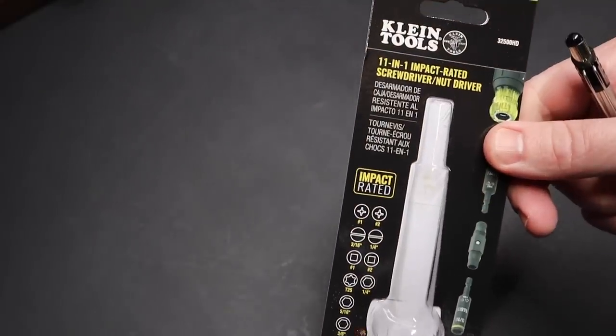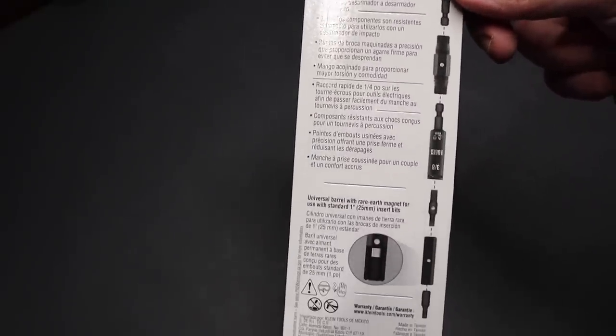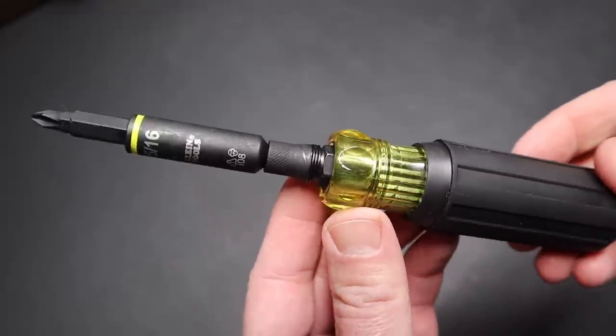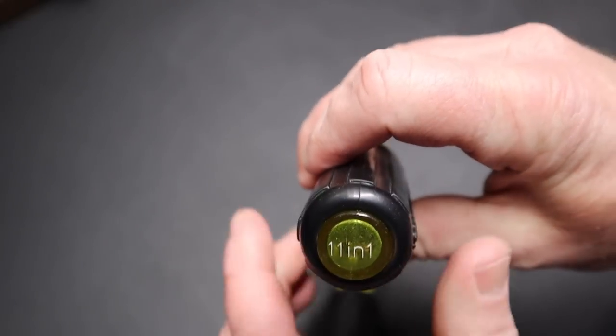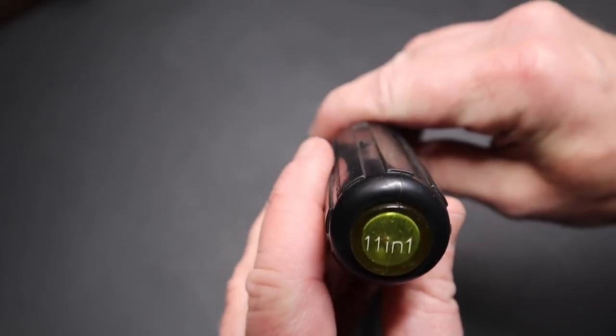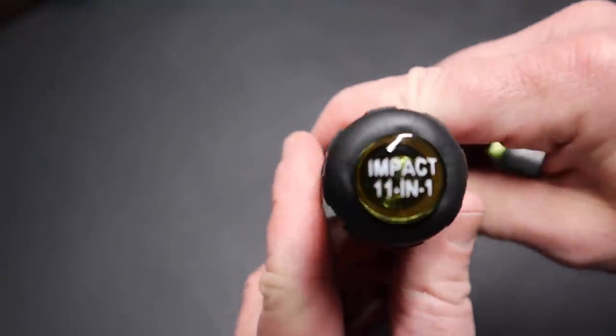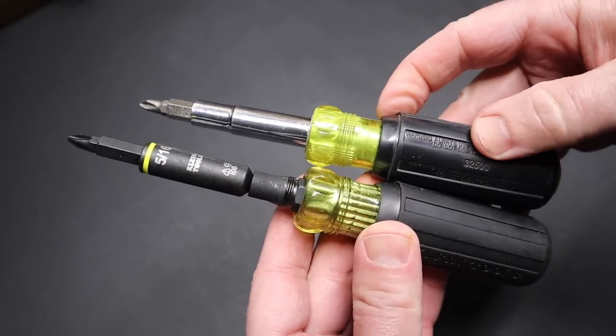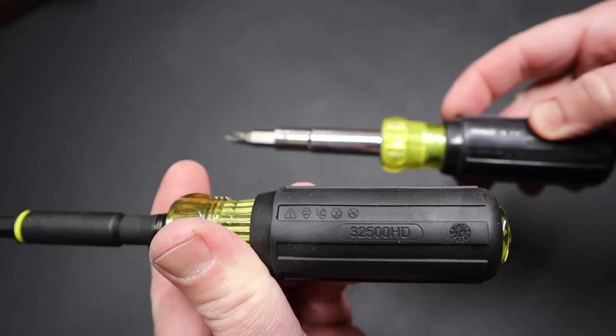This is what the package looks like that it came in. It really kind of looks like an update to the Klein 11-in-1, the standard that I think most folks are familiar with. This is the standard 11-in-1 tool that sells for about $5 or less. This new tool is the impact rated Klein 11-in-1. Right now at Home Depot sells for about $20. So you can see how it's sort of an update on this 35-200, and they're just calling this one the 32500 HD, right there on the handle.